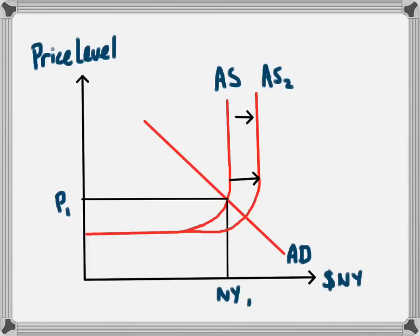We see as a result of this microeconomic reform that's been going on in this economy, that the supply curve has shifted out. Now, the shifting of the supply curve gives us a new level of national income. We've moved from NY1 to NY2.